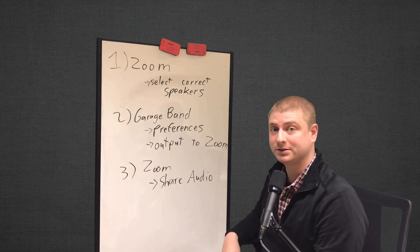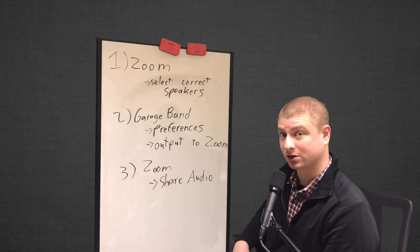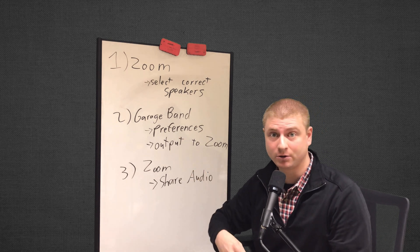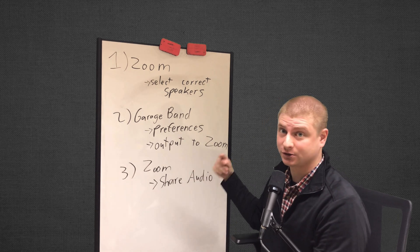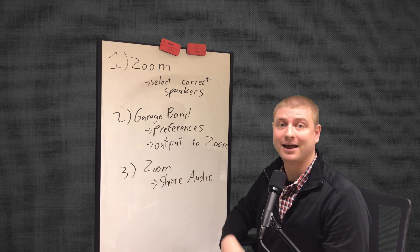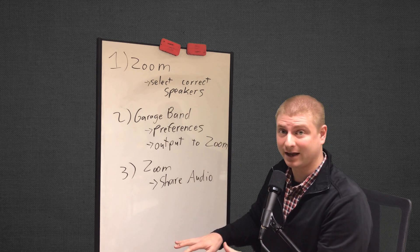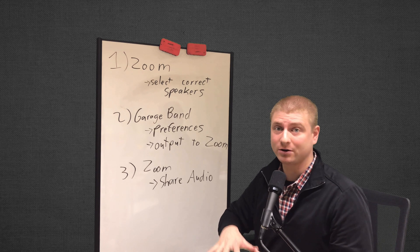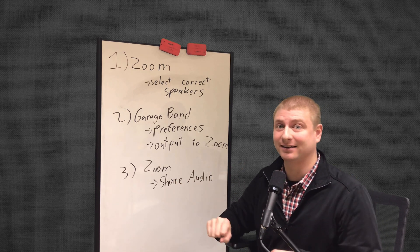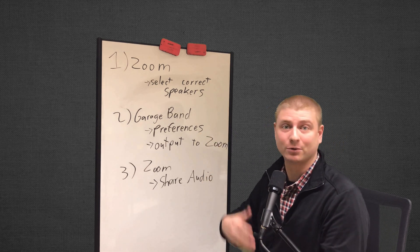So to wrap up all the instructions, you're going to connect everything together and then in Zoom, select the correct speakers. In GarageBand or Ableton Live or whatever program you're using, send your output to Zoom and then three, in Zoom, share your audio in your meeting. And then you should be able to play your instrument. It could be a electric piano. You can switch it over to a MIDI keyboard or a pad like my Ableton Push. You can use anything that you've got connected as long as it's controlling through a music creation software or app.